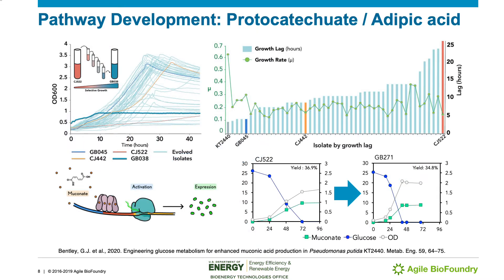To address this, we performed adaptive laboratory evolution on CJ522, shown in red on these graphs, to improve growth, and then used a muconate biosensor to isolate evolved strains that also maintained a high yield of muconate.